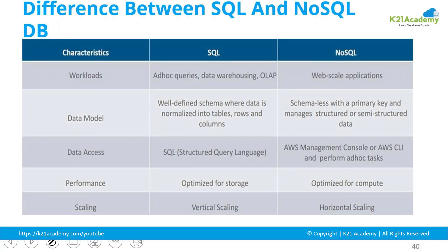RDS is a SQL service and DynamoDB is a NoSQL service — not only SQL. So what is the difference between both of them? When it is a SQL service, you are able to support OLTP, data warehousing, OLAP, and ad hoc queries are supported.